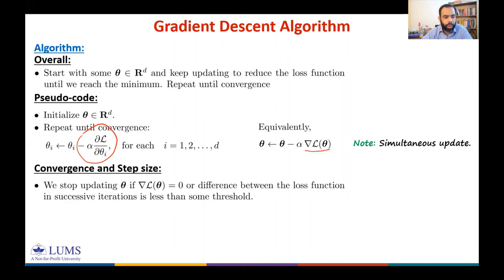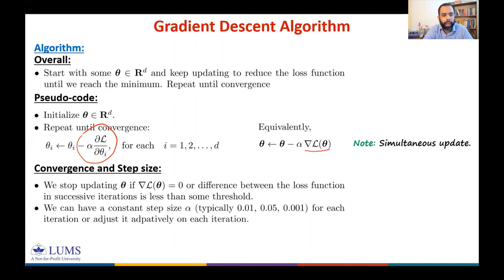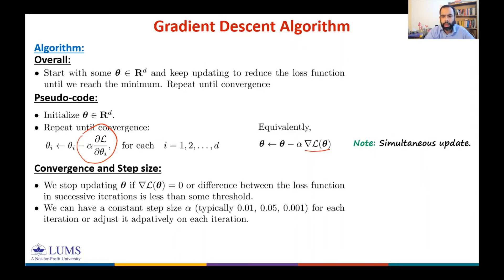For alpha, we can have a constant step size or an adaptive learning rate per iteration. Typical values are 0.01, 0.05, or even smaller.